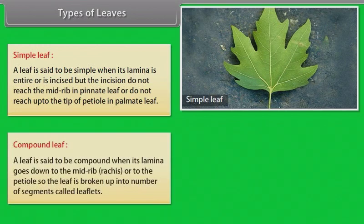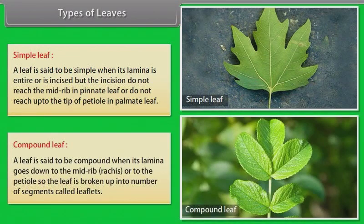Compound leaf: A leaf is said to be compound when its lamina goes down to the mid-rib, rachis, or to the petiole, so the leaf is broken up into a number of segments called leaflets.